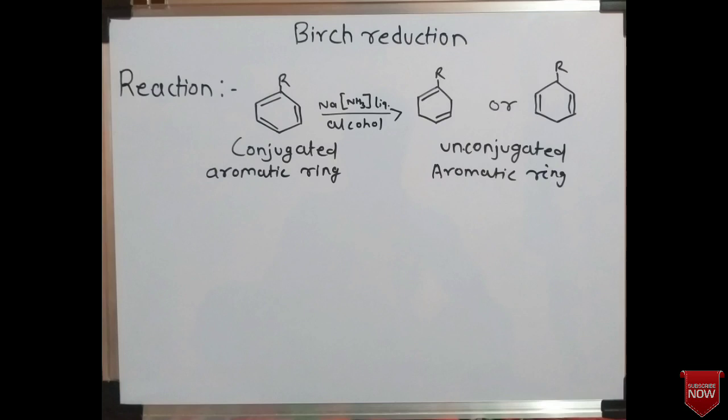In this reaction the catalyst is sodium in liquid ammonia with alcohol, which acts as a proton donor. The proton is nothing but a hydrogen atom. That hydrogen atom is added onto one of the carbon atoms of the aromatic ring, which leads to the unconjugated form of the conjugated aromatic ring — the conjugated aromatic ring is converted into the unconjugated aromatic ring.